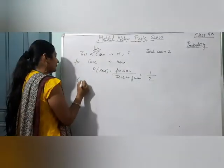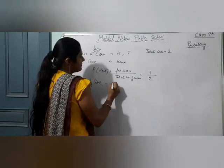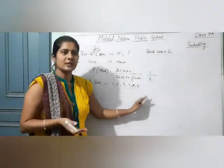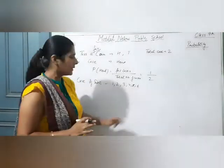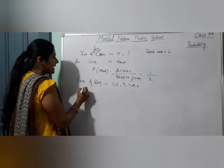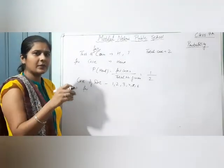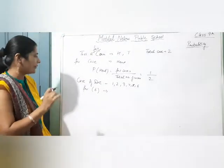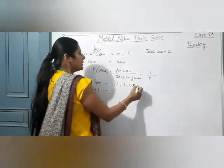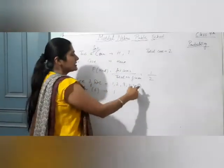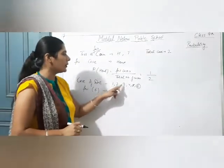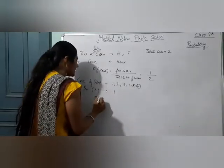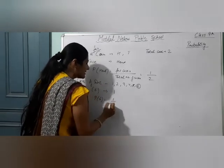ऐसा ही हमारा case of dice होता है. Dice को toss करते हैं, तो आपके पास यह 6 cases होते हैं — इसके अलावा कुछ नहीं होता. Dice के case में, for example, जैसे लुडो खेलते हैं तो जीतने के लिए 6 चाहिए. तो favorable case मुझे क्या चाहिए? 6. तो 6 आने के chances कितने हैं — इन सब में से 6 तो एक ही बार आएगा. 6 cases हैं हमारे पास अलग-अलग: 1, 2, 3, 4, 5, 6 — इनमें से 6 एक बार आ रहा है. तो probability क्या होगी 6 आने की? 1 by total number of cases, that is 6.